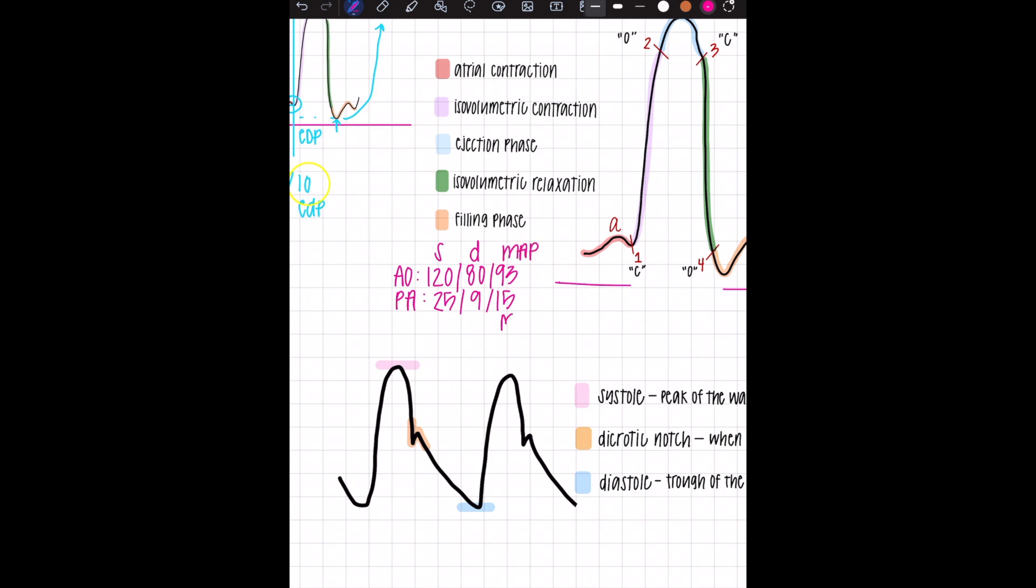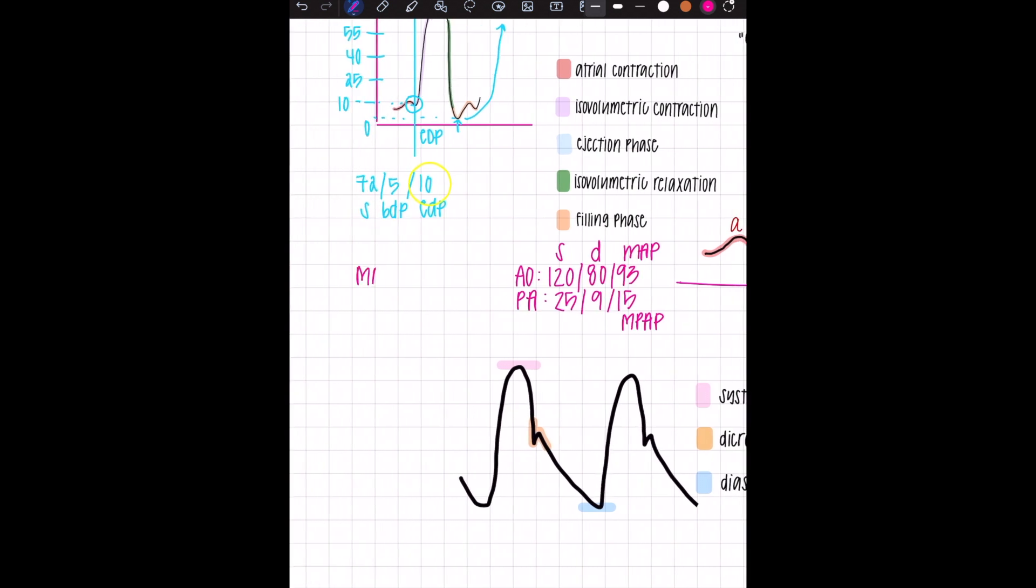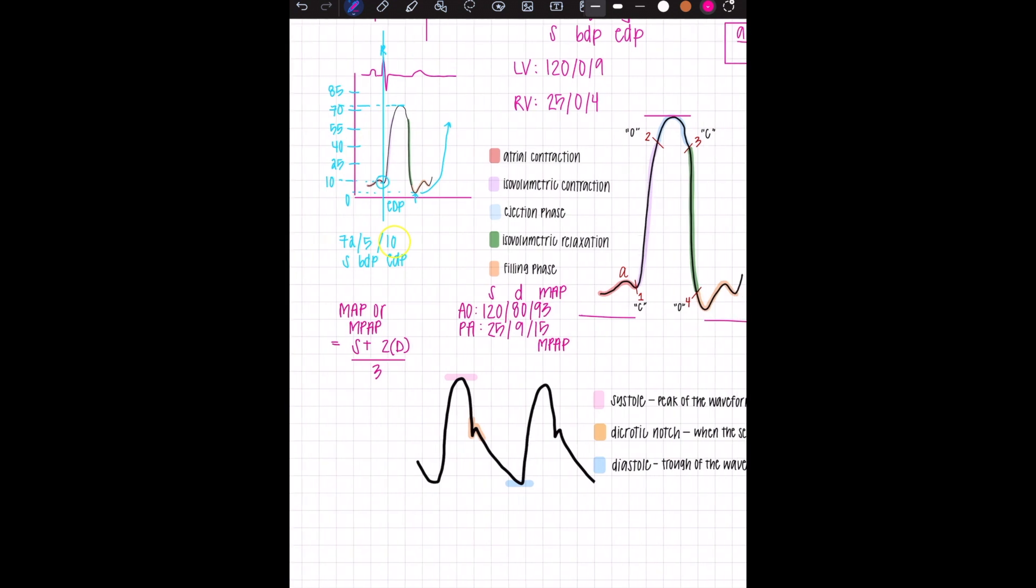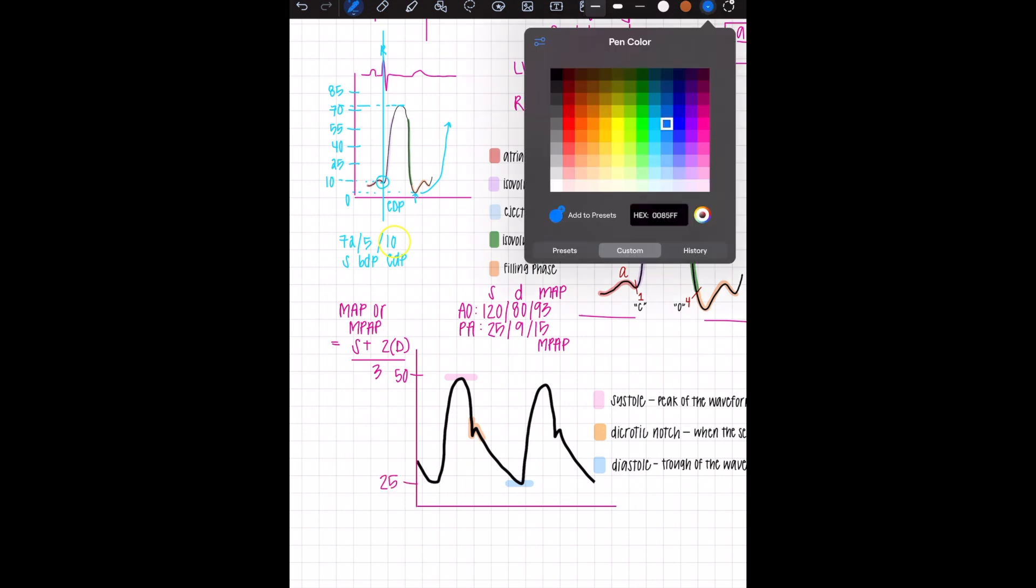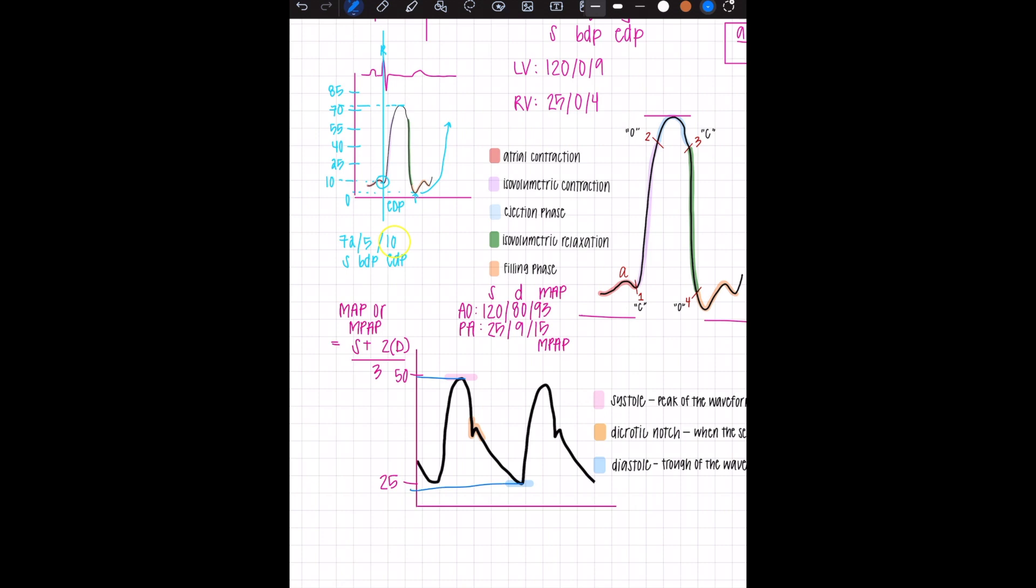Remember each of these numbers is systolic, diastolic, and either MAP or MPAP, mean arterial pressure or mean pulmonary artery pressure, but they're the same formula, which is systolic plus two times the diastolic pressure over three. I'll show you examples of what that looks like on this particular waveform.